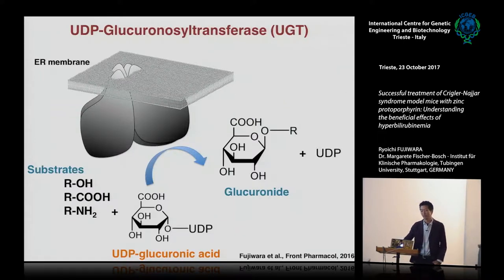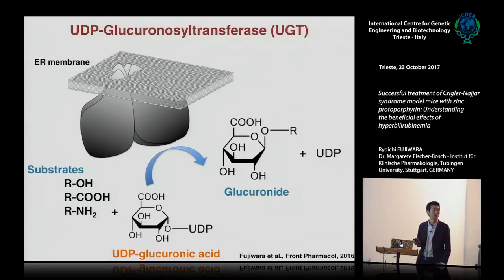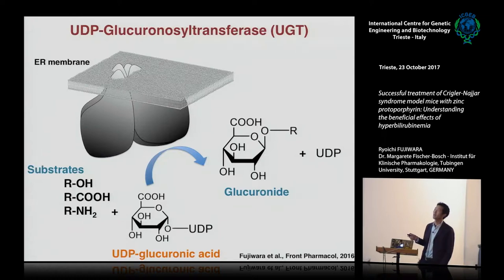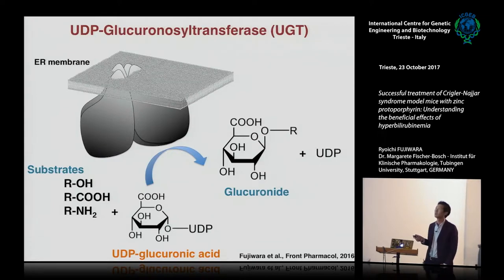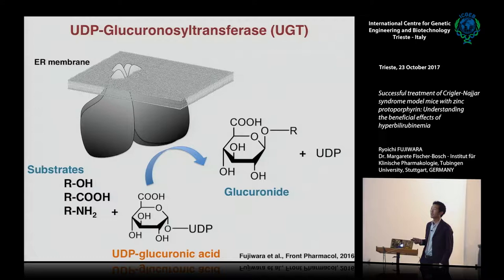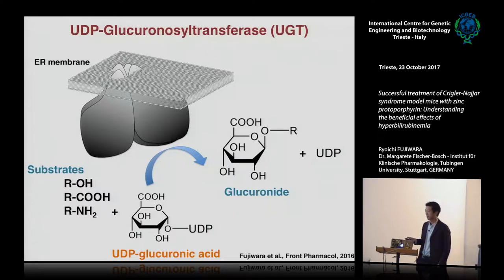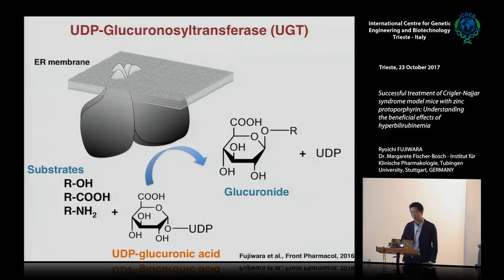Let me introduce some basics of this enzyme, UDP glucuronosyltransferase, UGT. UGTs are also known as phase 2 drug metabolizing enzymes. They catalyze glucuronidation of substrate. They are membrane-bound enzymes expressed in the endoplasmic reticulum membrane, and most of the proteins are located in the luminal side. They form dimers or sometimes tetramers, and they recognize two molecules: one is substrate and one is co-substrate, UDP glucuronic acid. UGTs transfer this glucuronic acid to the substrate, so they produce glucuronide. This is an important process of detoxification.